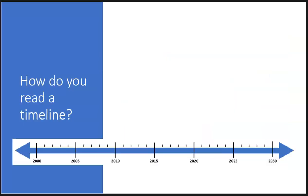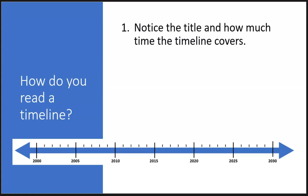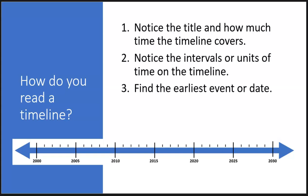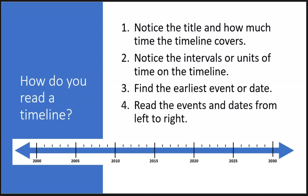So how do you read a timeline? First, you want to notice the title and how much time the timeline covers. Then we want to look at the intervals, or the units of time on the timeline. We want to find the earliest event or date. And most timelines we'll use are horizontal, so you'll read them from left to right.